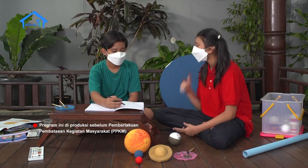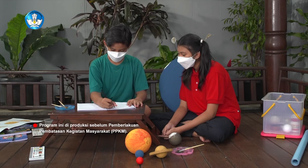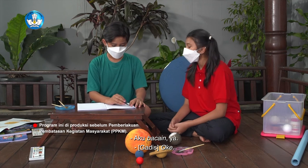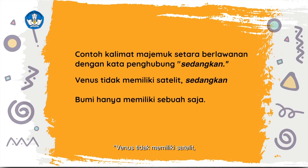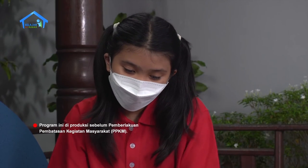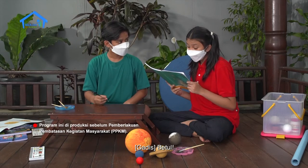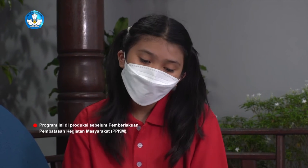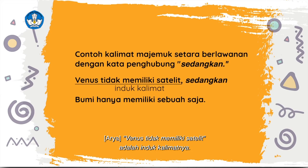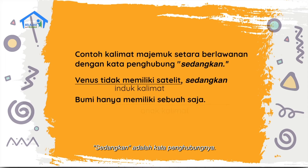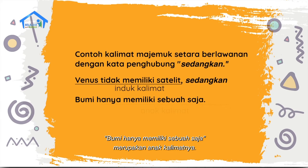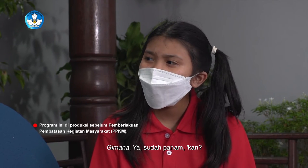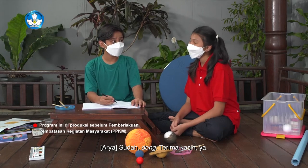Aku coba ya. Selesai. Aku bacain ya. Venus tidak memiliki satelit, sedangkan bumi hanya memiliki sebuah saja. Coba aku lihat. Betul. Tapi induk kalimat dan anak kalimatnya yang mana ya? 'Venus tidak memiliki satelit' adalah induk kalimatnya. 'Sedangkan' adalah kata penghubungnya. 'Bumi hanya memiliki sebuah saja' merupakan anak kalimatnya. Gimana, sudah paham kan? Sudah dong. Terima kasih ya. Sama-sama.